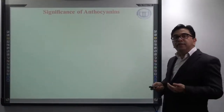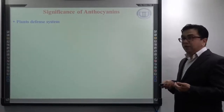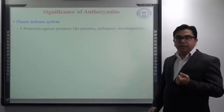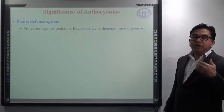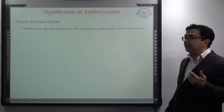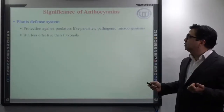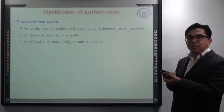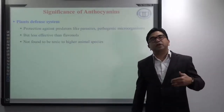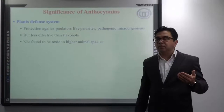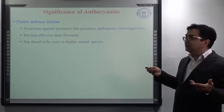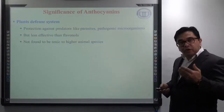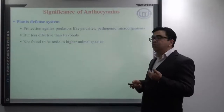Continuing with the significance of anthocyanins: anthocyanins also play a major role in the plant defense system, helping to protect the plant against various predators like parasites and pathogenic microorganisms. However, they are found to be less effective as compared to flavonoids. As compared to the flavonoid group, anthocyanins are less effective, and most importantly they are not found to be toxic to higher animal species.